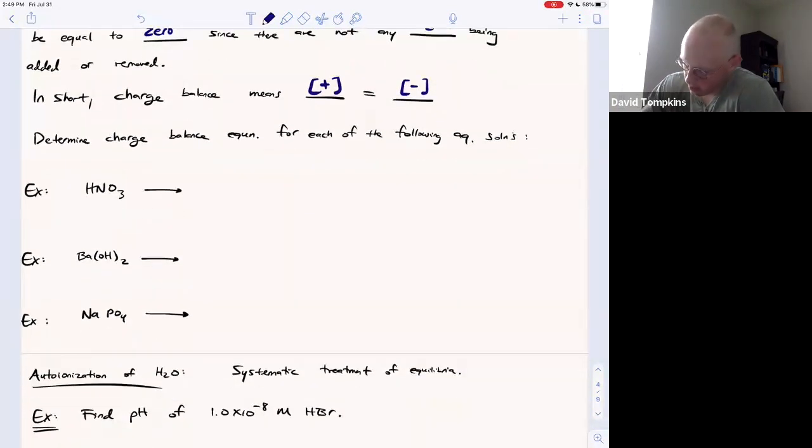Keep in mind in every aqueous solution, we have the dissociation of water, which occurs according to its equilibrium constant KW. Dissociation, or autoionization or autopertolysis. One water acts as a base and one acts as an acid to form hydronium and hydroxide. We'll keep in mind these two ions are always present.